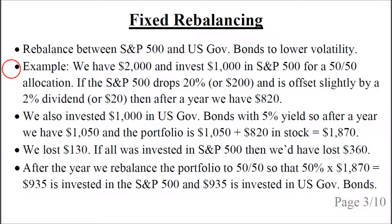If the S&P 500 drops 20%, or $200, and this is offset slightly by a 2% dividend or $20, then after a year we have $820 left of the $1,000 invested in the S&P 500. We also invested $1,000 in US government bonds and let's say they had a 5% yield, so after a year we would have $1,050. The entire portfolio would be $1,050 plus the $820 from the stock investment, for a total of $1,870.